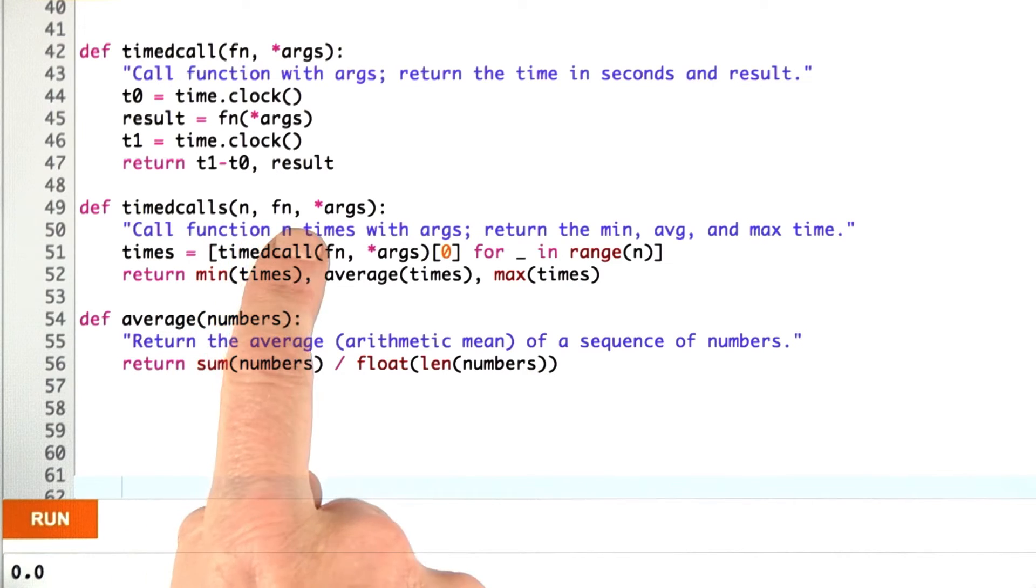So part of the problem is, if you have a good idea how long the function takes, then you can be precise about what a good value of n is. If you don't, you don't know.